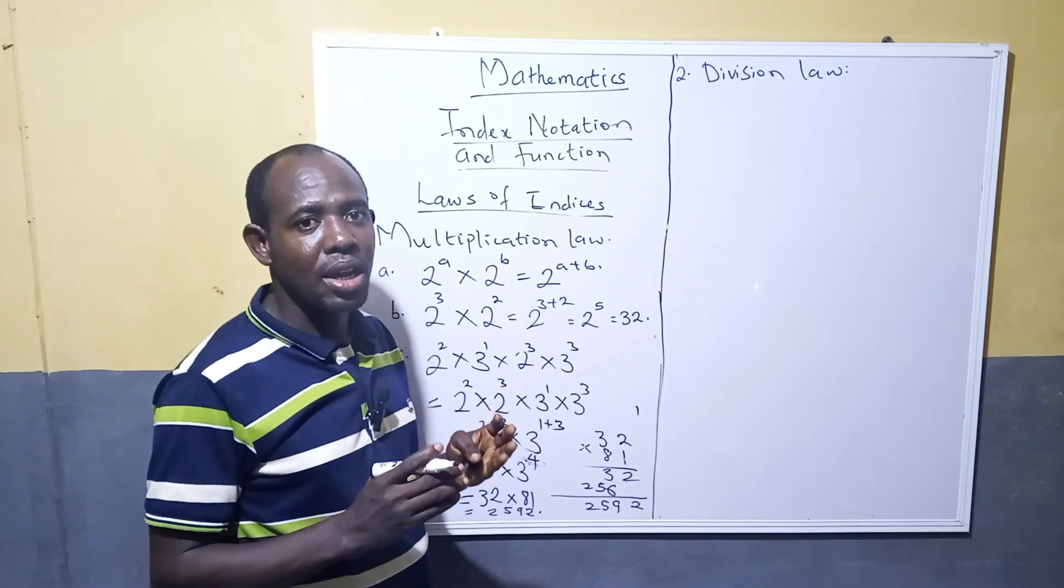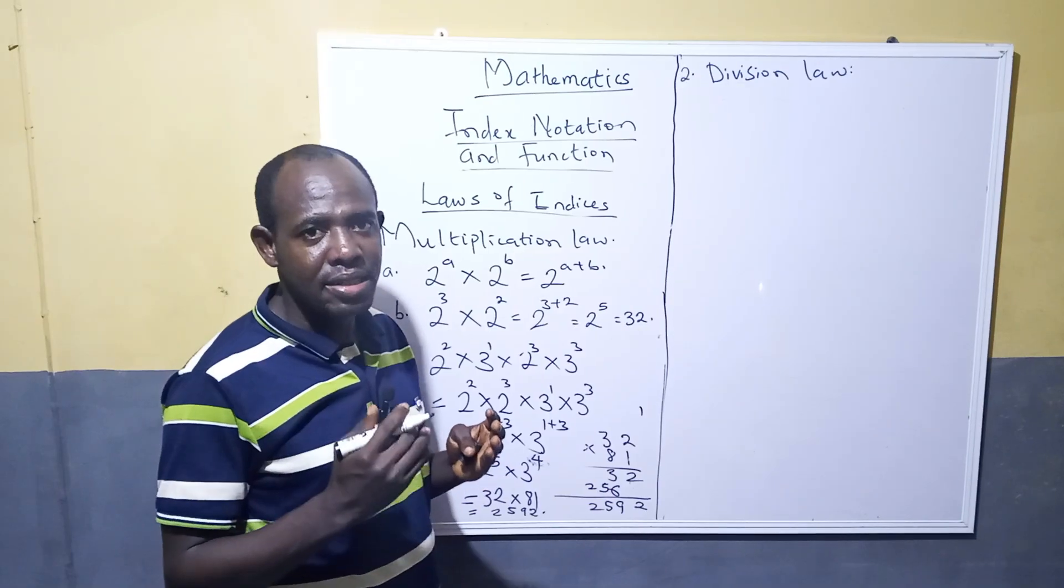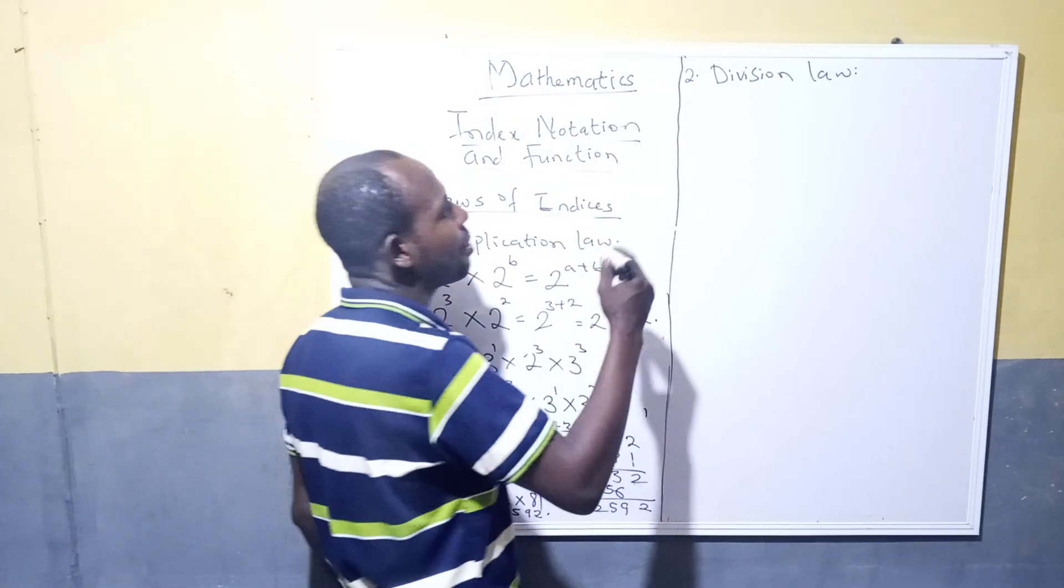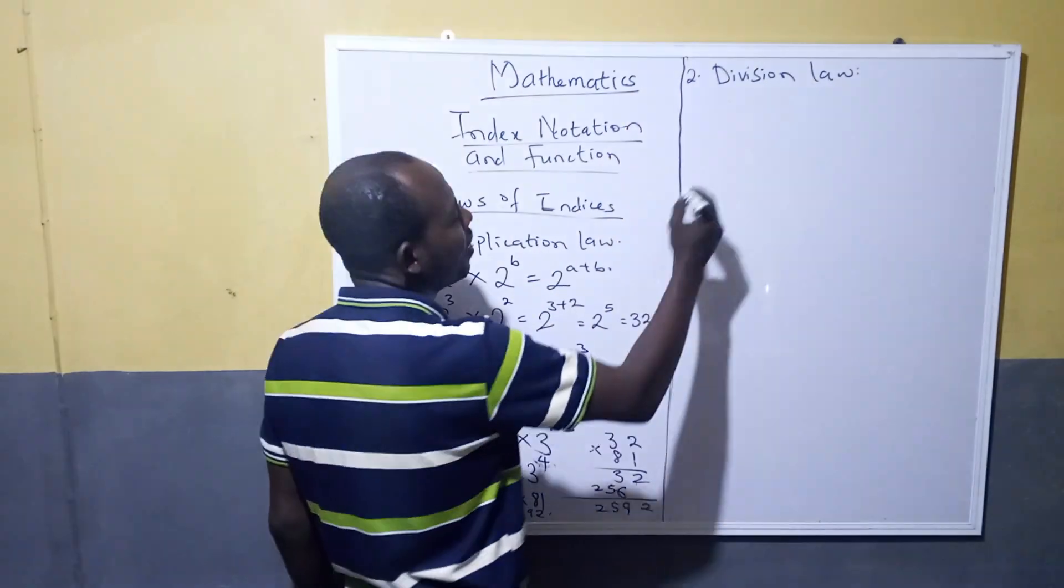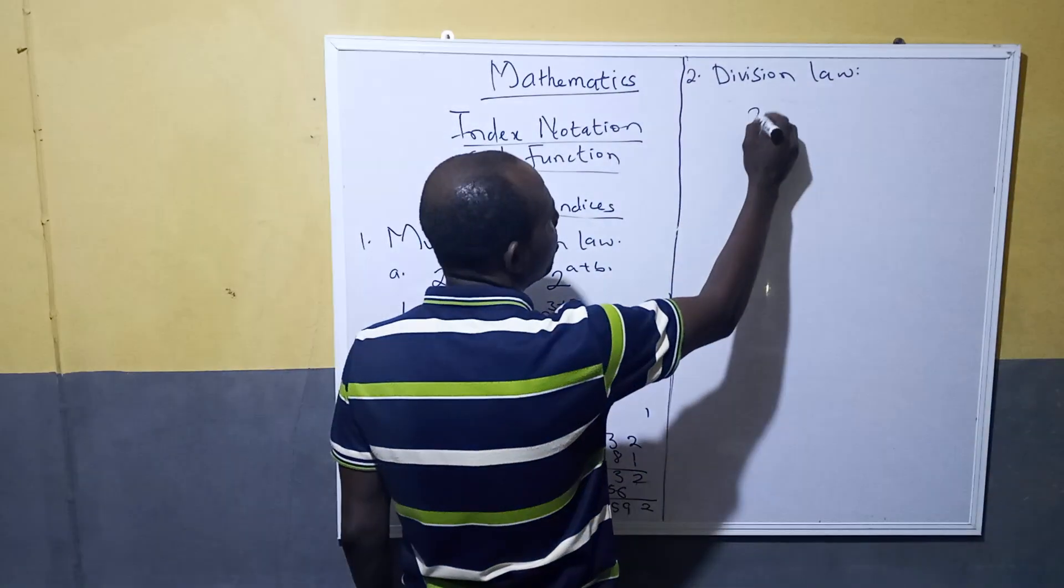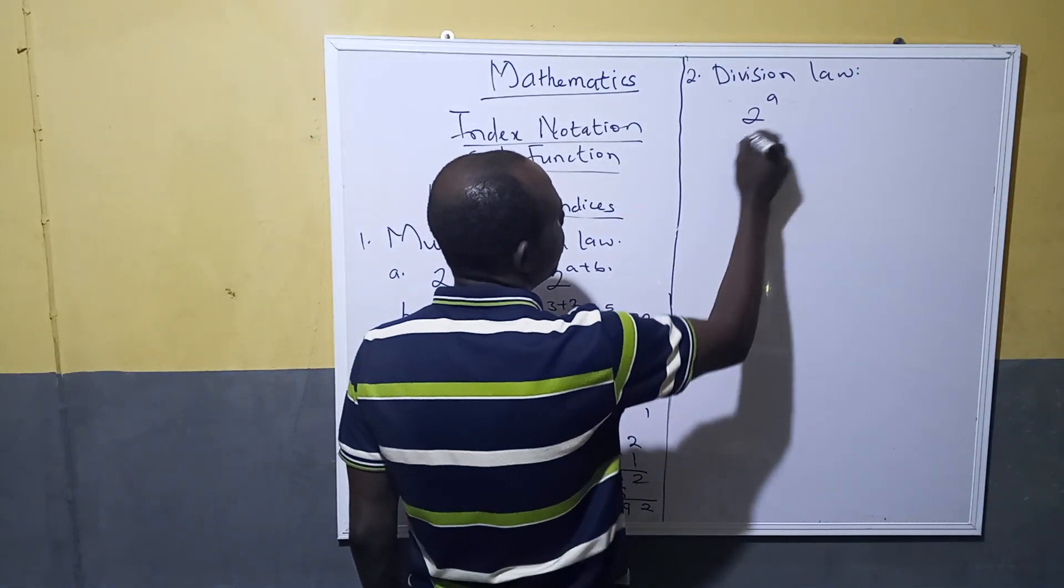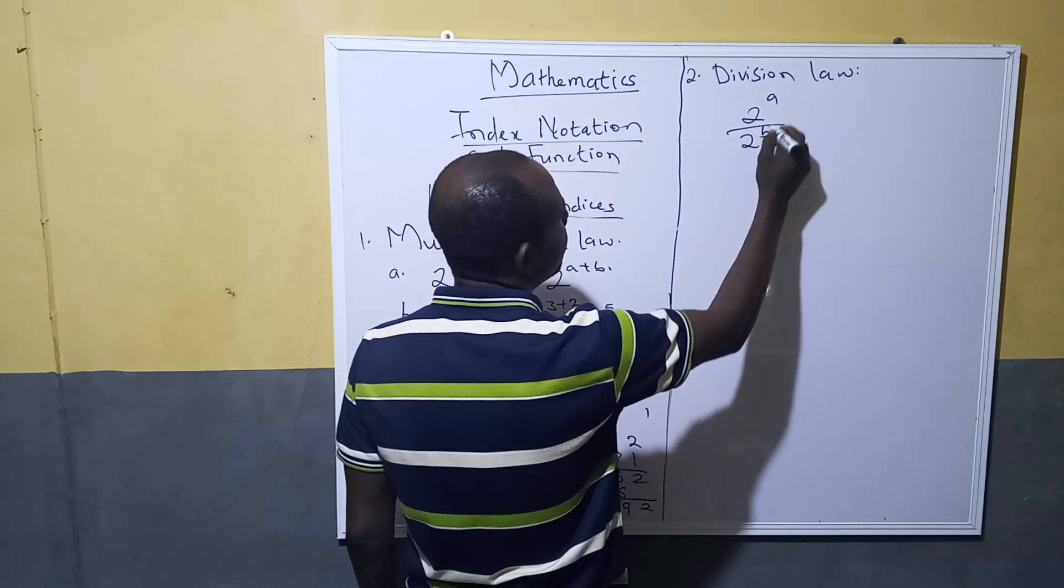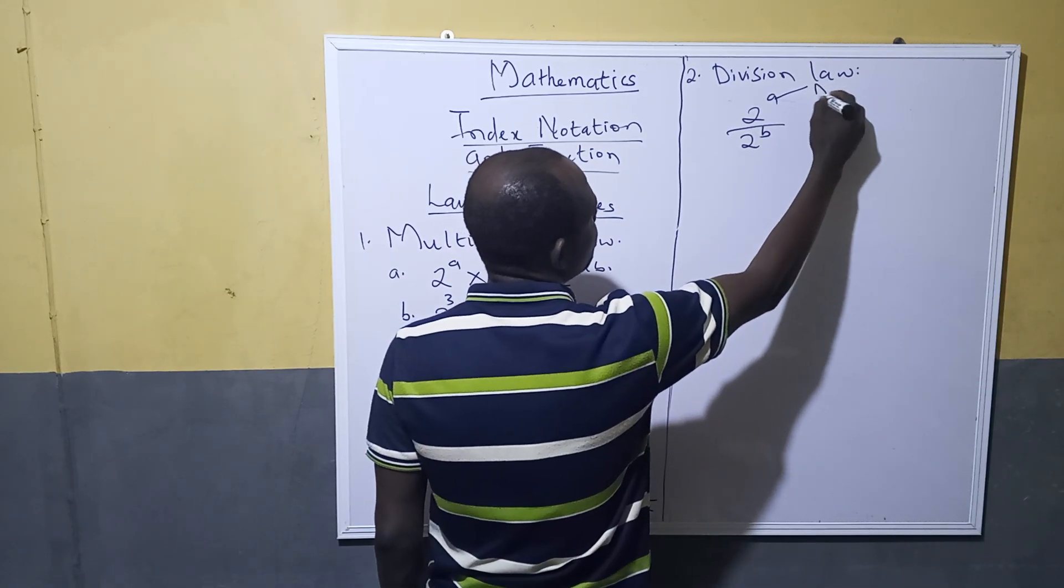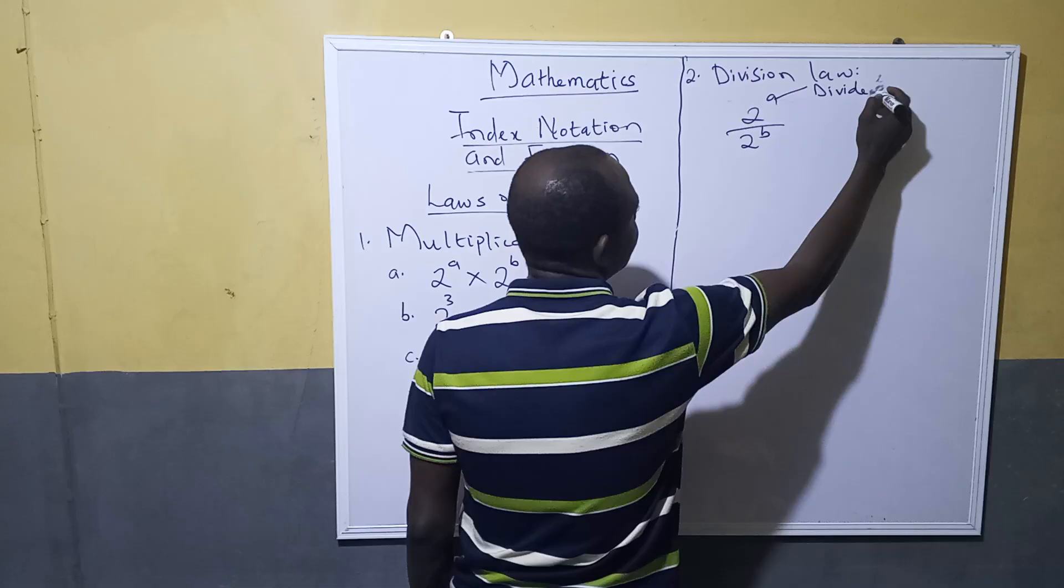What I mean by divisor and dividend: for example, I have a number 2^a over 2^b. This a here is called dividend, while b is called divisor.